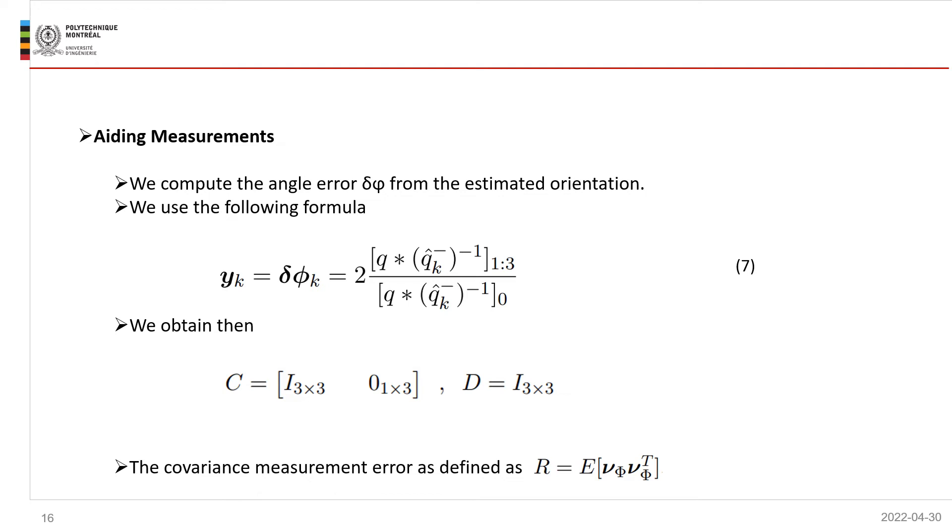The measures from the star trackers are Euler angles. To update our estimate, we transform the Euler angles to a quaternion, q. And then we compute the angle error delta phi by using this equation. So as we can see, this equation is linear in delta x. We obtain then C and D as follows. The measurement covariance matrix R is a 3 by 3 matrix of the attitude measurement error angles. We assume that R is the covariance matrix from the noise vector of the star trackers.